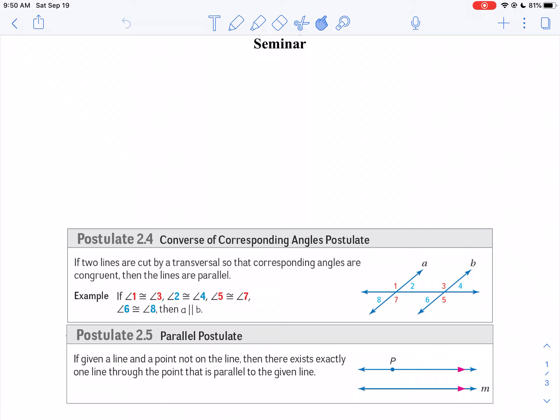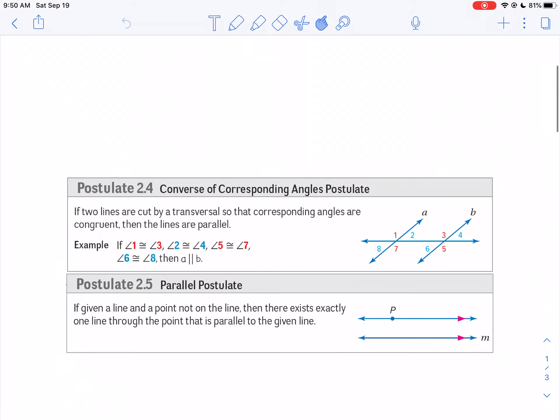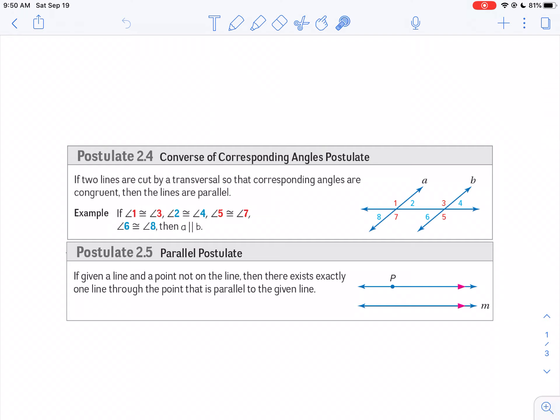We're going to be using this first postulate mainly. That is, if the corresponding angles are congruent. So if you have two lines crossed by a transversal, and the corresponding angles are congruent, the lines must be parallel. That's the key.